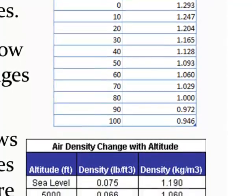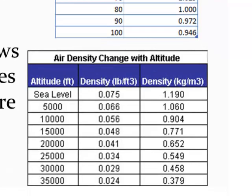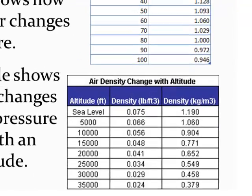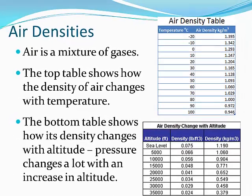Although temperature can make a big change, the bottom table shows pressure effects. We'll work in kilograms per cubic meter as the standard units. At sea level, air has a density of about 1.2 kilograms per cubic meter. As you go further up in the atmosphere to 5,000 feet, density drops to about 1.1 kilograms per cubic meter. Eventually at 35,000 feet, that density is down to 0.379 kilograms per cubic meter. The temperature does change somewhat as you rise through the atmosphere, but pressure is what's really causing the biggest difference here.